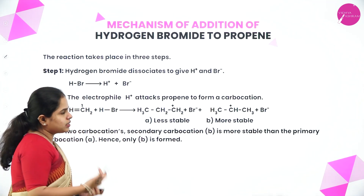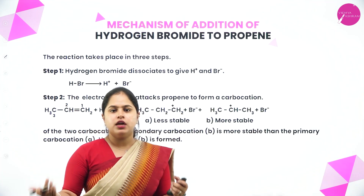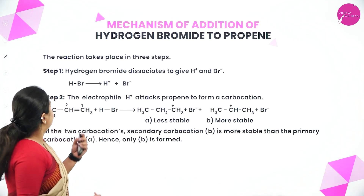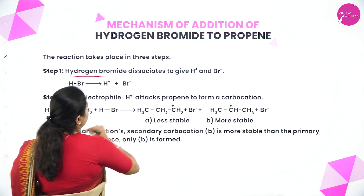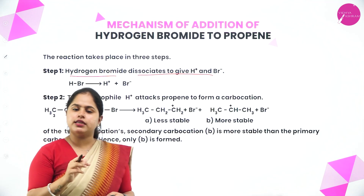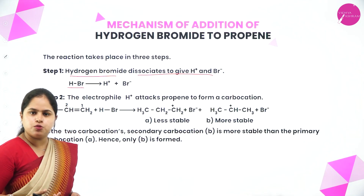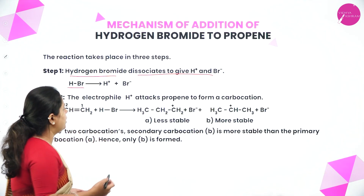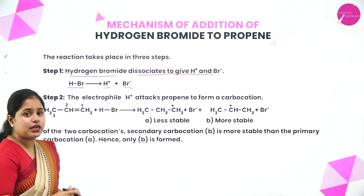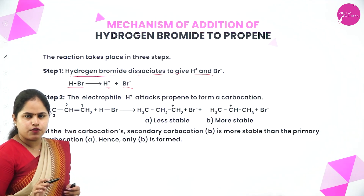Now let's understand the mechanism of addition of hydrogen halide. The reaction takes place in three steps. Step one: hydrogen bromide dissociates to give H+ and Br−. Since bromine is more electronegative, bromine gets partial negative charge and hydrogen has partial positive charge, so it dissociates into H+ ion and Br− ion.